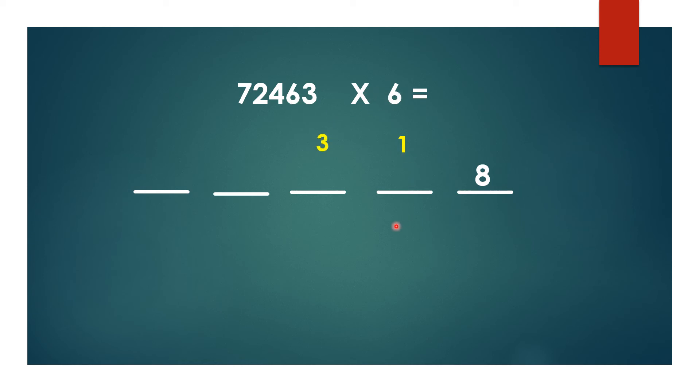So 3 as carryover to the next dash and 7 here. Now 6 × 4 = 24, 24 plus 3 = 27. So 2 as carryover and 7 here. Next, 6 × 2 = 12, 12 plus 2 is 14.